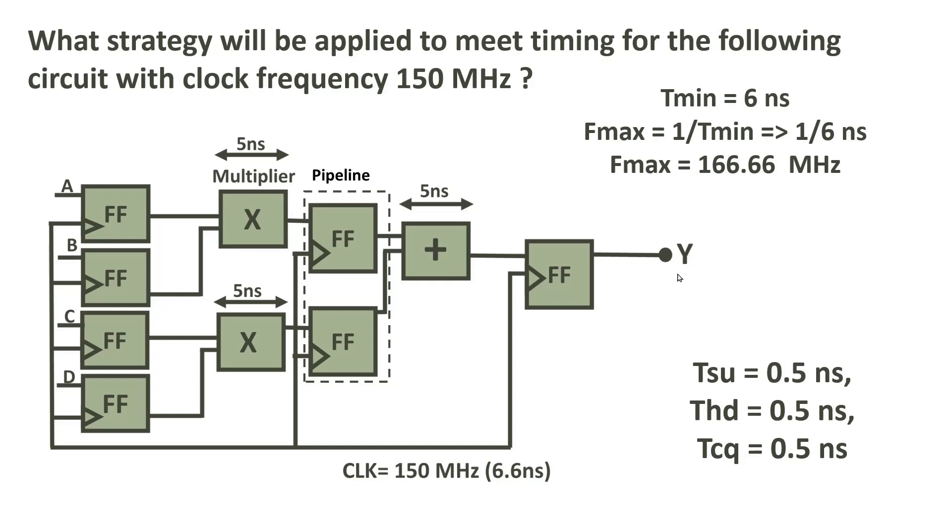So we need to make a change in such a way that its functionality is intact. So whenever A, B, C, D is applied, after two clock cycles, Y should be obtained. Even if we get Y after one clock cycle, that is also not acceptable. We are not authorized to change the functionality of the design. So please rethink with the correct values of setup, hold, and TCQ. And if something comes to your mind, please write it down in the comment section. Otherwise, I will reveal its solution in the next video.